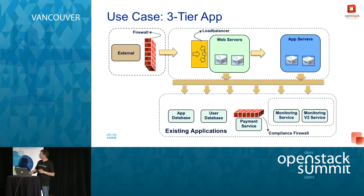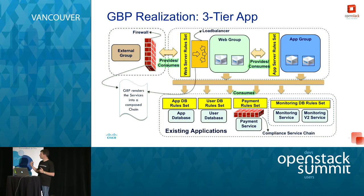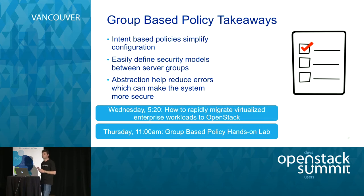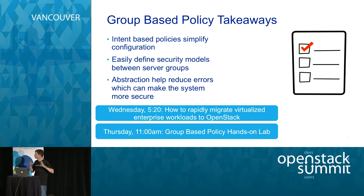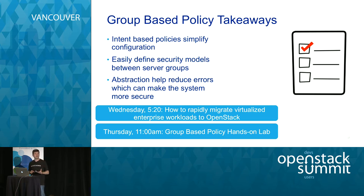In a more complicated case with multiple existing applications and three tiers, all you need to do is set your rules for each, and group-based policy turns that into configuration for you. Takeaways: it simplifies configuration, makes it less error-prone, and errors are what lead to security breaches. There's a user session Wednesday at 5:20 where IT teams migrated existing enterprise workloads to OpenStack using group-based policy, and a hands-on lab Thursday at 11:00 if you want to get your hands dirty.